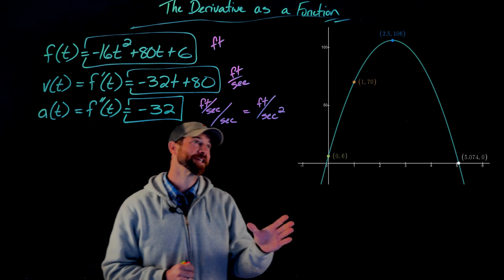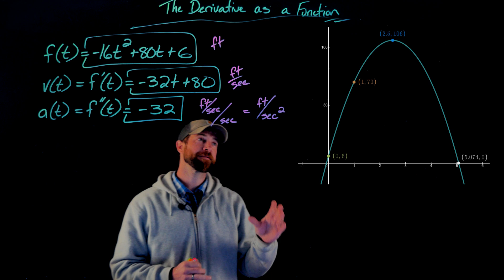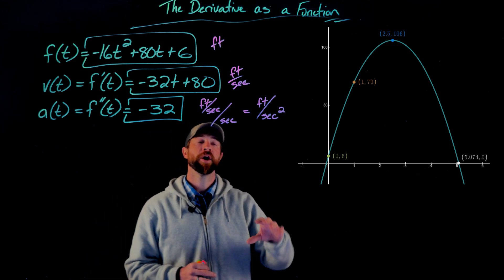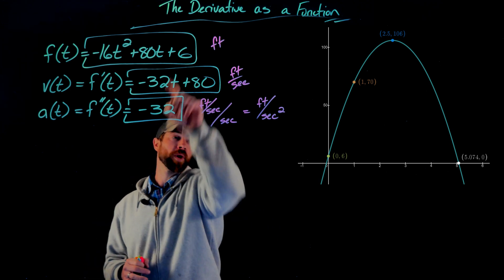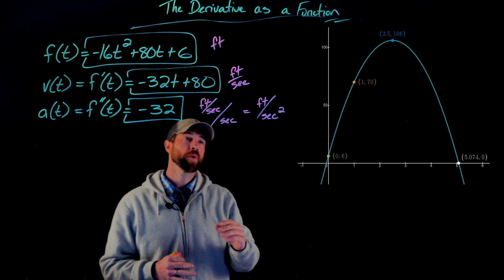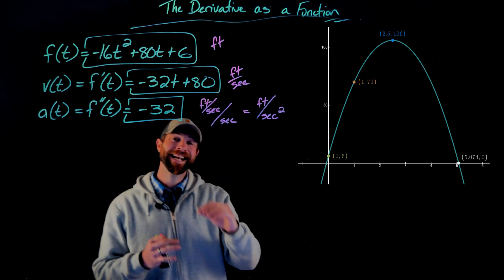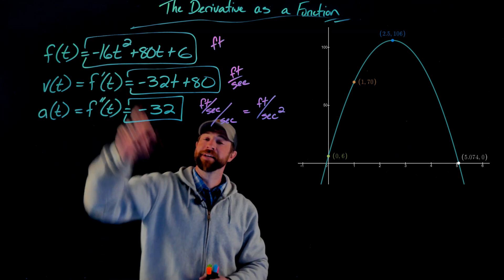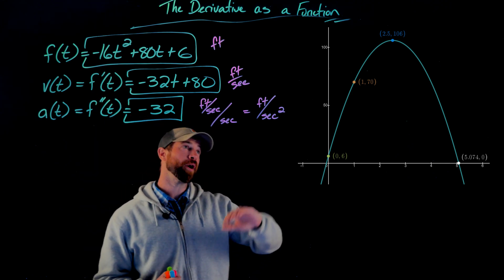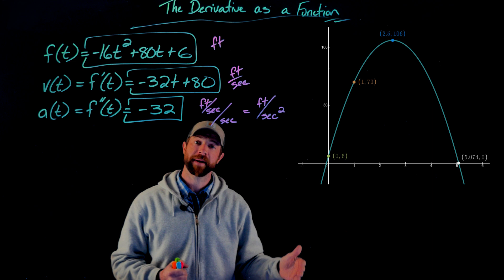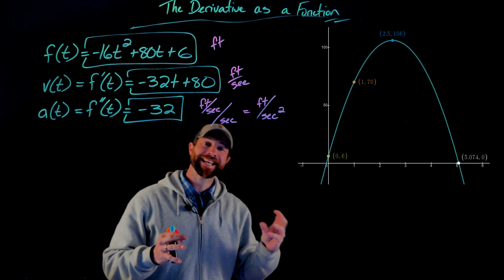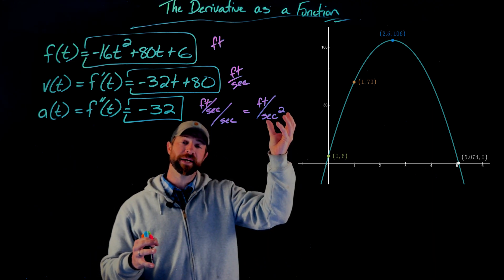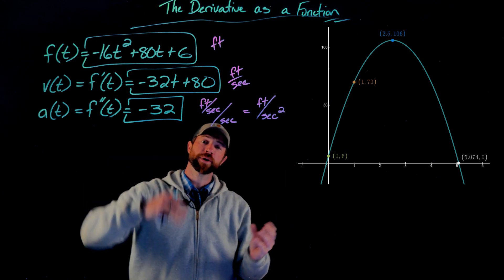All right, now if we look at the graphical representation here, first with the position function, right? We have this starting point, this y-intercept of six. We then are increasing at 80 feet per second, at least at first, but the effect of gravity is bringing this back down. So the ball reaches this peak and then comes back to the ground. That said, again, it had this initial force that was going up that's reacting to the force of gravity.